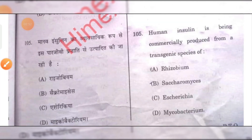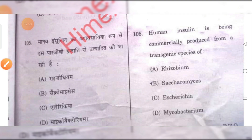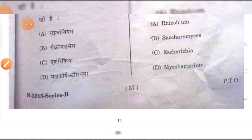Human insulin is being commercially produced from the transgenic species of E. coli. C is the right answer.